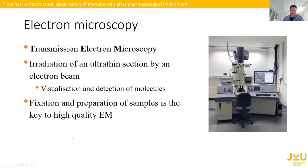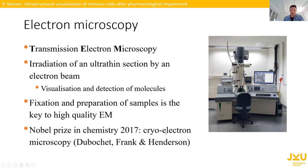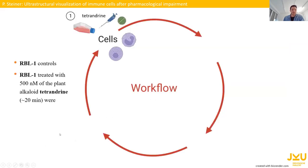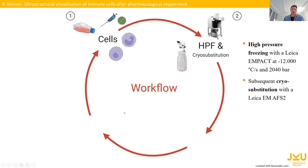For electron microscopy, fixation is very important. Fixation and preparation of the samples is in general the key to high quality EM. I'll characterize our fixation workflow very briefly. The Nobel Prize in Chemistry in 2017 was awarded to Dubochet, Frank and Henderson for the invention and development of cryo electron microscopy. Our workflow: we work with the rat basophilic leukemia cells, control cells and cells treated with the plant alkaloid tetrandrine.